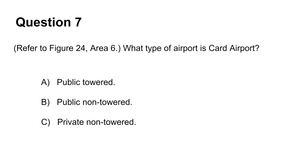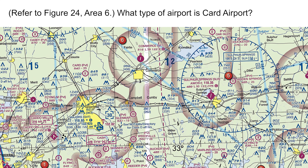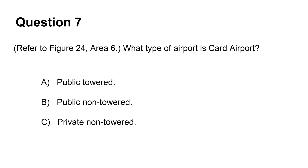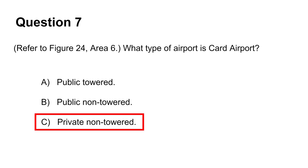The seventh question asks you to identify the type of airport for Cart Airport. Looking at the map, the airport data is written in magenta. All airports written in magenta are non-towered airports, while airports marked in blue indicate the presence of a tower. This makes Cart Airport non-towered. There is also an R in a circle which, per the legend, indicates a private non-public airport. Hence the answer is C: private non-towered.